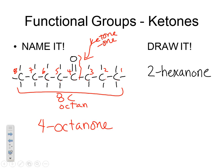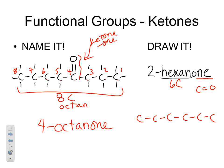Likewise, 2-hexanone: hex- means 6 carbons, and the -one ending means a C=O in the middle of the chain. Draw 6 carbons, then put the double-bonded oxygen on the second carbon — numbering right to left — and give all other carbons four bonds. That's the ketone. That's the first of our videos; the other video will cover carboxylic acids and esters.